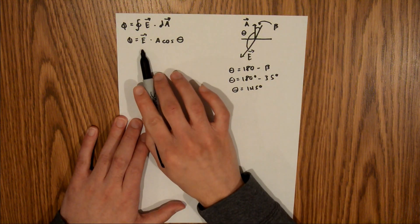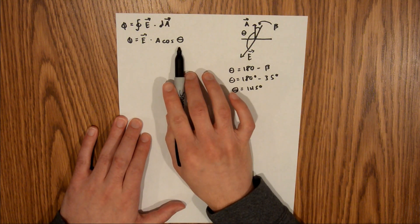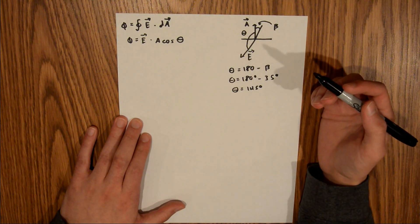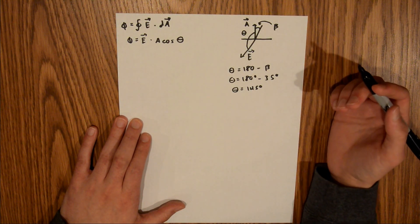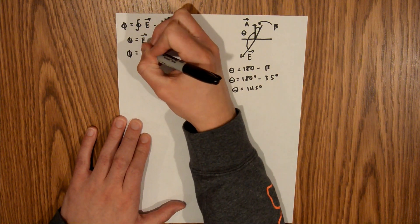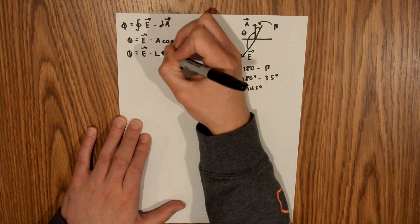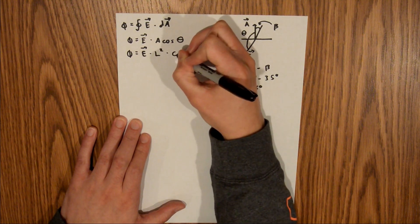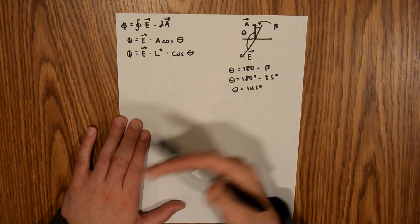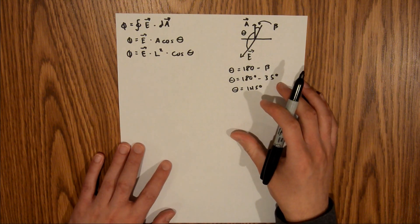We're given the electric field in the problem, we just found theta, and now we need to find our area. Since we have a square surface and the area of a square is the length of one side squared, we can rewrite this as electric field times the length of a side squared times the cosine of theta. We are given the length in the problem, so we have everything we need to solve it.